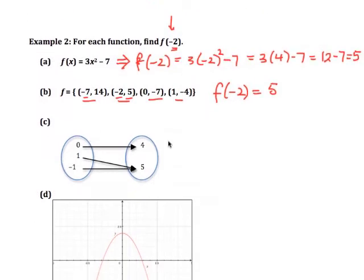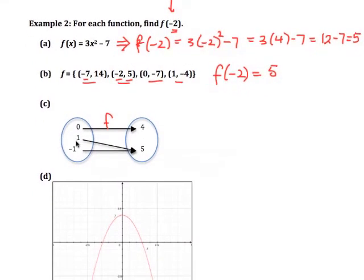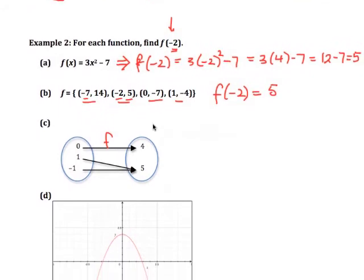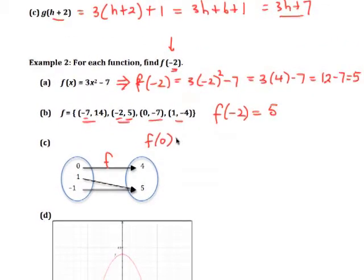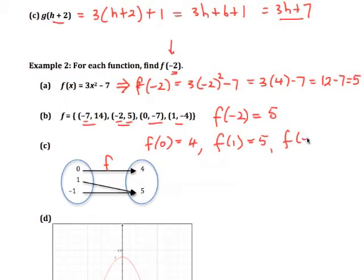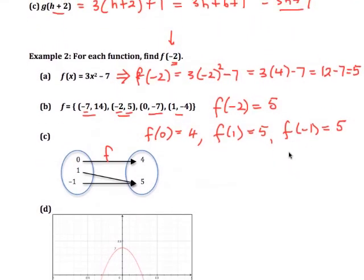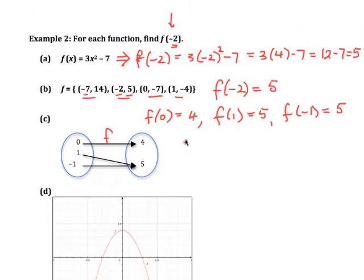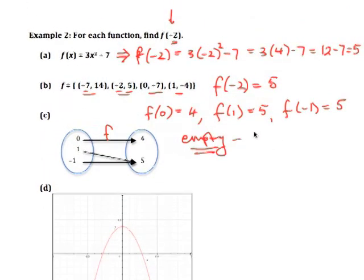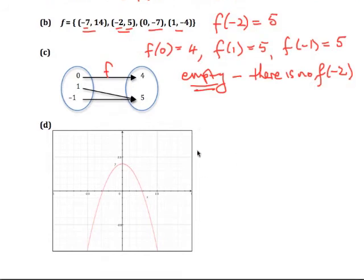This one here we have a picture. Notice that 0 is being mapped, if I use f here, to 4. 1 is being mapped to 5, and negative 1 is to 5 as well. So what I have here is f of 0 is 4, I have f of 1 is 5, f of negative 1 equals 5. And so notice that we don't have an f of 2, so this is empty. We don't have, there is no f of negative 2.